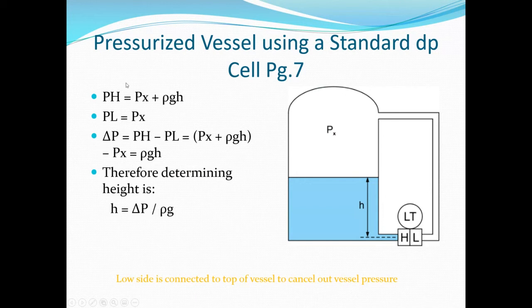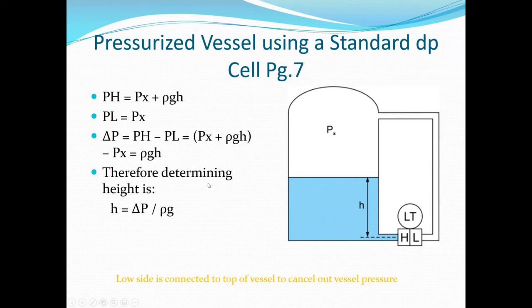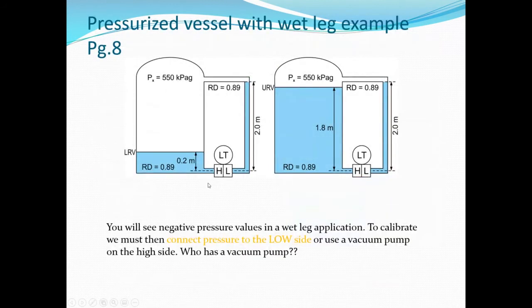All the math for pressurized and atmospheric vessels follows the same standard procedure: two columns showing LRV and URV conditions, with what's on the high side and what's on the low side. If you follow this process consistently, you will not likely make any errors — I can't stress that enough.